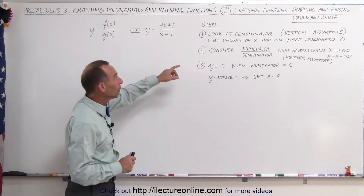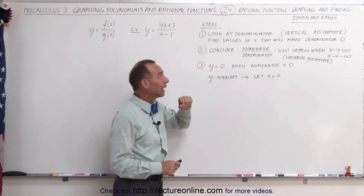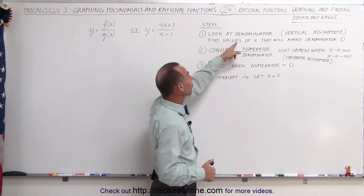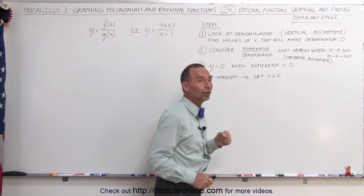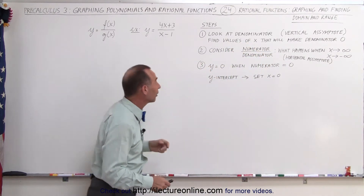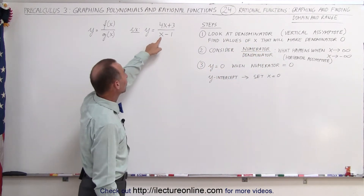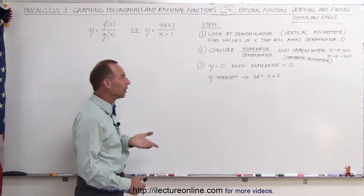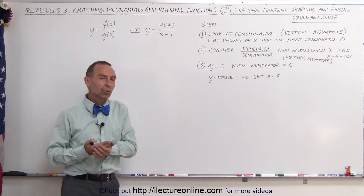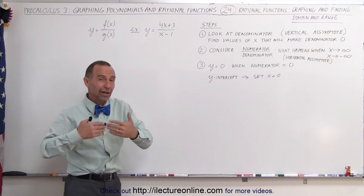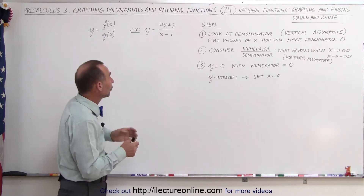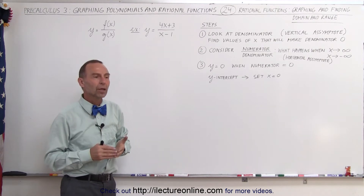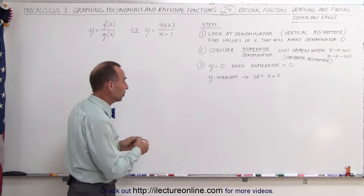First, we look at the denominator and find all the vertical asymptotes by finding the values of x that make the denominator zero. In our example, when x equals 1, then 1 minus 1 is 0, which makes the denominator zero. We can't have a zero denominator, so that gives us an undefined value for y.